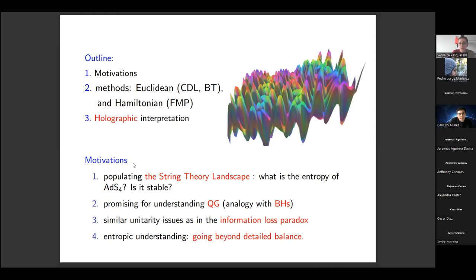As a starter, the motivations: in the string theory landscape, most of the minima obtained from dimensional reduction are anti-de Sitter. For this reason, the stability of anti-de Sitter in four dimensions is one of the key issues to be addressed. Two-dimensional transitions and quantum gravity transitions as a whole are promising for understanding quantum gravity in analogy with black hole physics, because they show similar unitarity issues as in the information loss paradox.